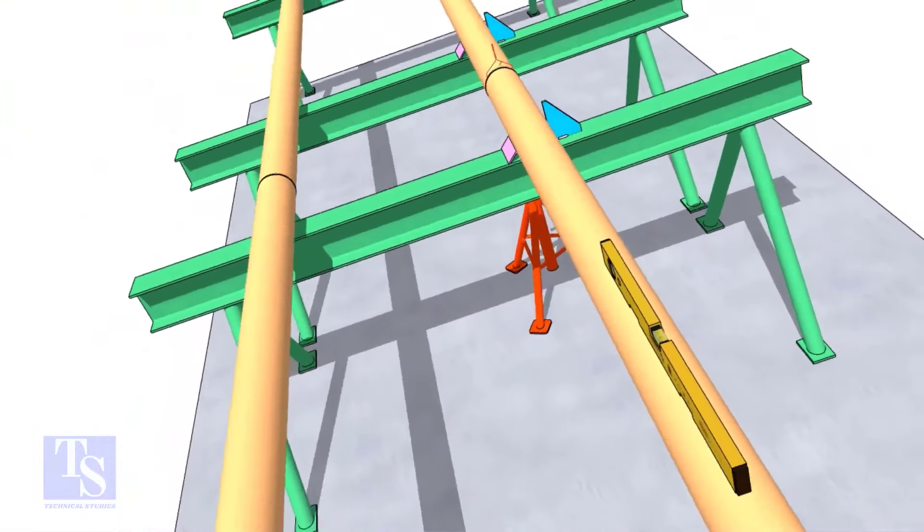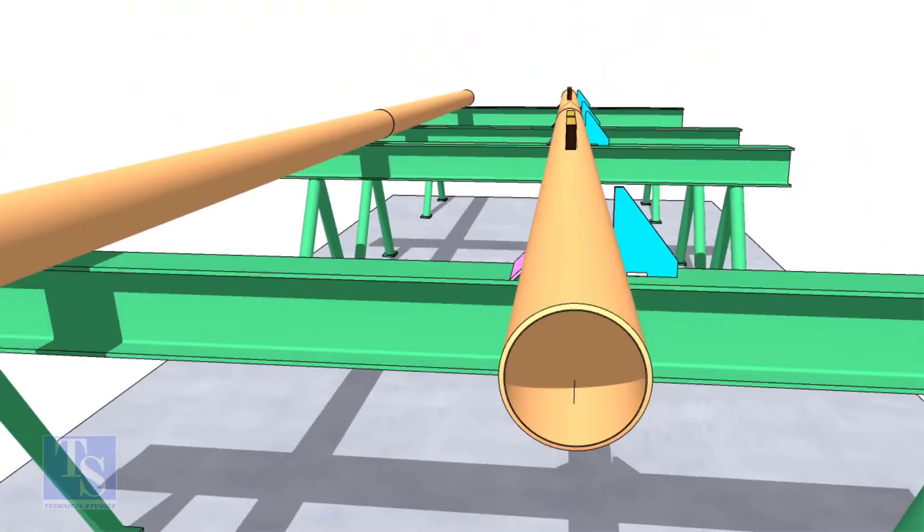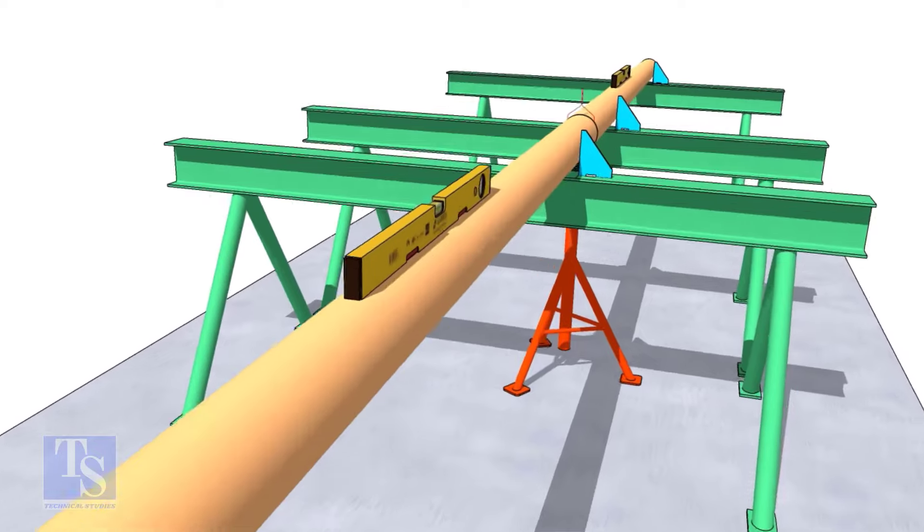Check the straightness of the pipes by looking from one end of the pipes. This is the best way to check the straightness.